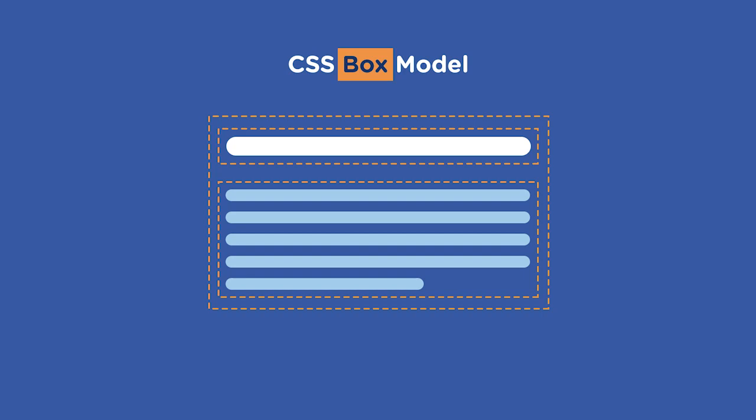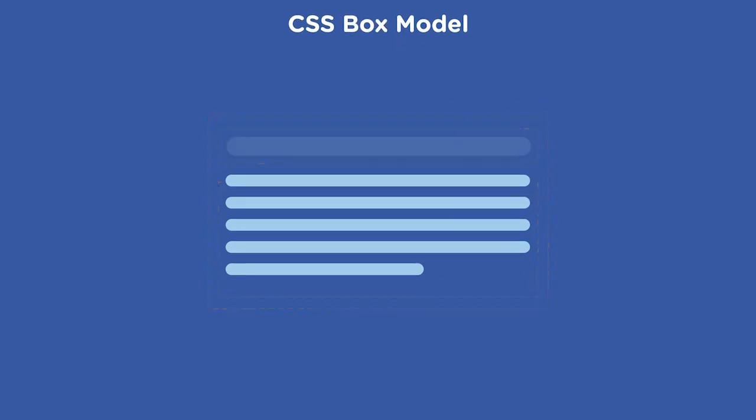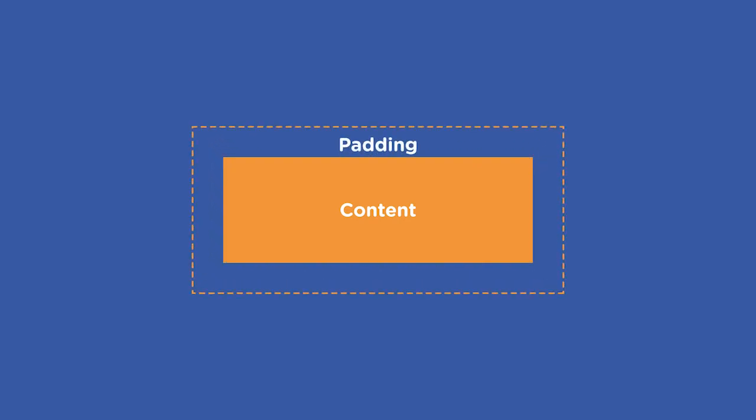Let's examine our paragraph. The innermost area and core component of the box is the content area. In the case of our paragraph, this is determined by the amount of text we have. Surrounding that content area is the padding area. Padding is often used to give the content area some breathing room by separating the content from the surrounding border area.